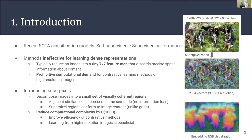To solve these problems, we introduce superpixels as a means to decompose images into a small set of visually coherent regions. This allows us to reduce the computational complexity by an order of 1000, which improves the efficiency of contrasting methods, and in turn allows us to learn semantics from high resolution images, which in itself is shown to be beneficial.